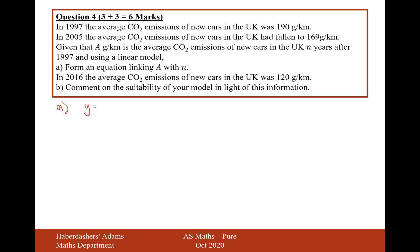So this is basically like y equals mx plus c for a linear model, only we're not going to be using y and x — we're going to be using a and n. So we need to work out what m the gradient is and what c the y-intercept is. The y-intercept should be easy because it's the CO2 emissions at 1997, and after 0 years the emissions is going to be 190.